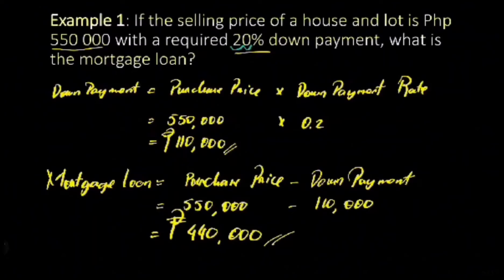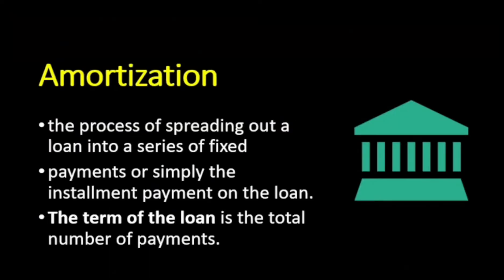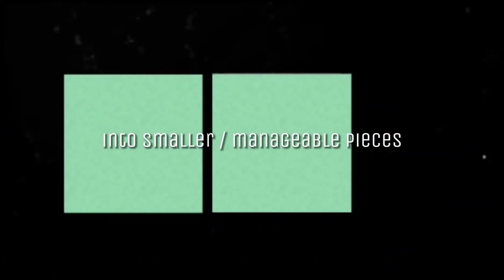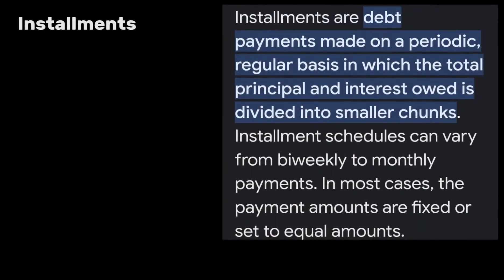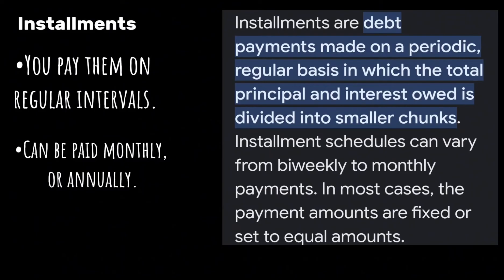The mortgage loan is the amount of money that the lender or any financing company provides to the borrower — in this case, Mr. De La Cruz. The next question is: how much is going to be his monthly amortization? Amortization means dividing a loan into a set of regular payments. It's breaking down a big amount of money that you borrow into smaller, manageable pieces that you pay back over time. These smaller payments are often called installments.